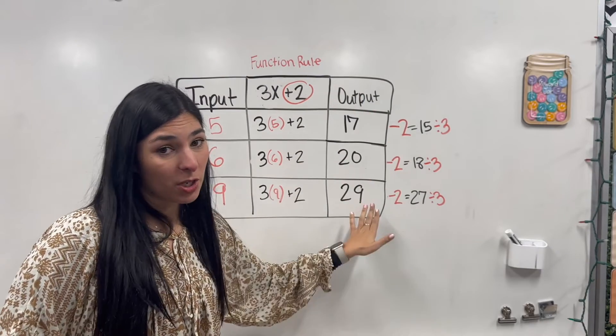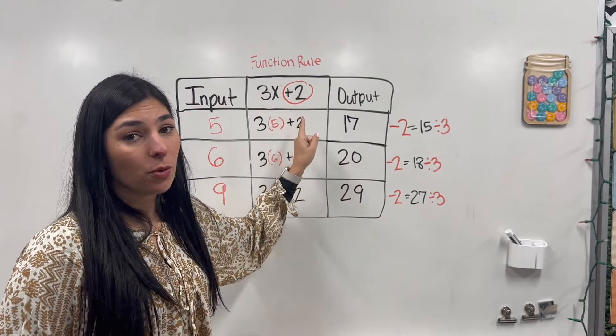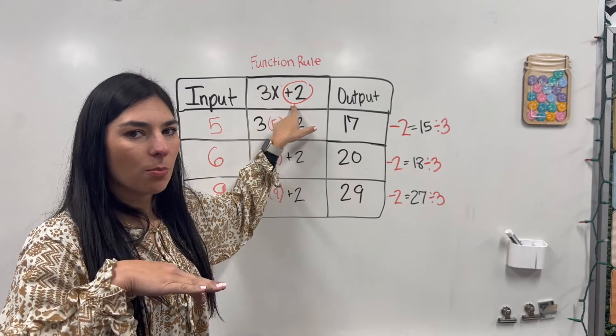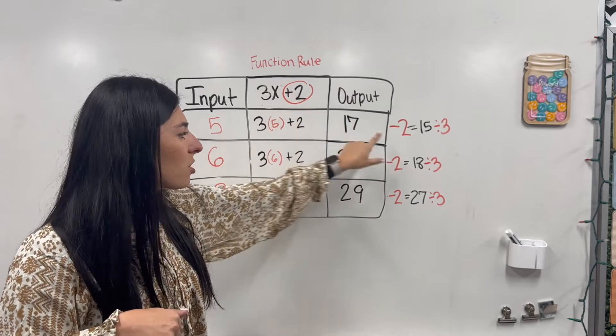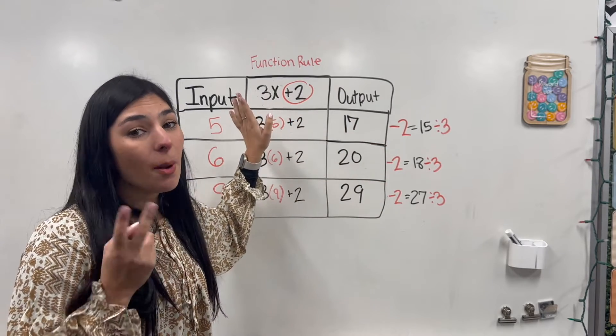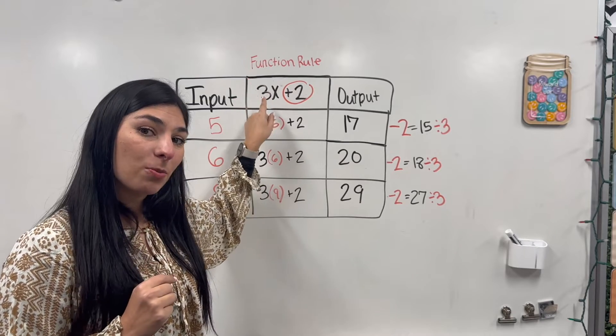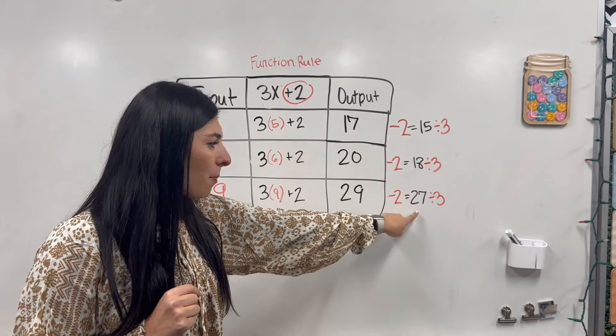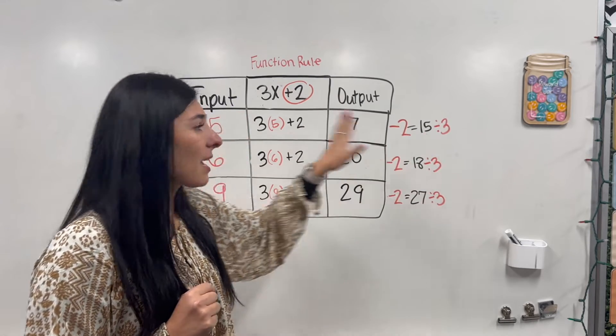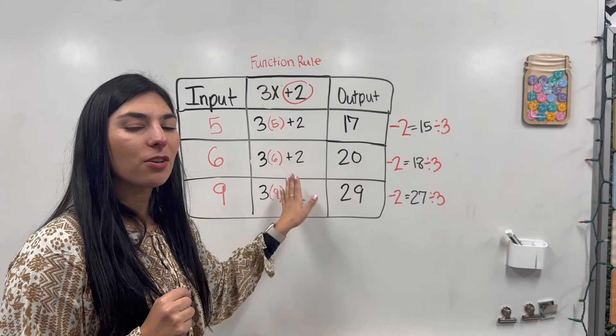Okay. So remember, you're starting with your output. You look at your function rule. Step 1. Look at the number that is not connected to the variable. Do the inverse operation. Opposite. So instead of plus 2, we're doing minus 2. Now we've got the 3x left. We are doing the opposite, the inverse operation. So instead of multiplication, we're doing division with our new outputs. So here we go. We found that out. And once we get these numbers, that is our input. And then fill in your function rule.